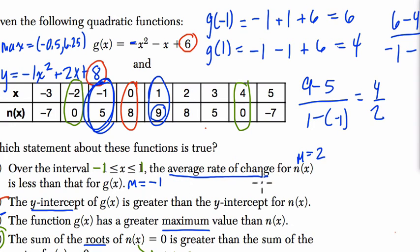And this is not true, right? The average rate of change for n of x is not less than the average rate of change for g of x. In fact, it's larger. All right, so just to recap, you can do all of this in the graphing calculator.